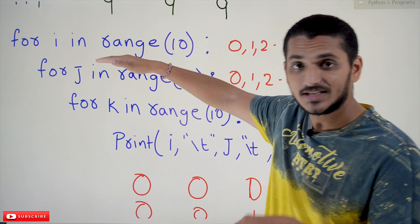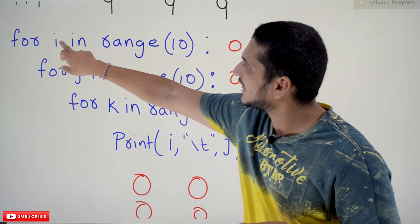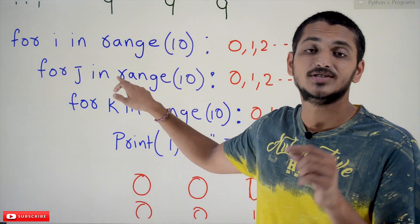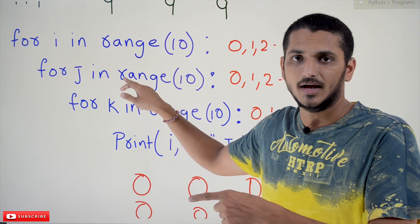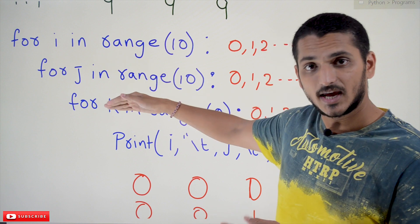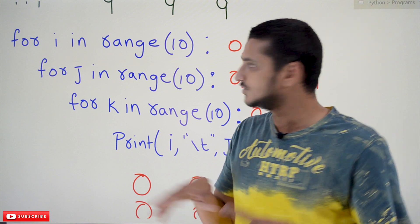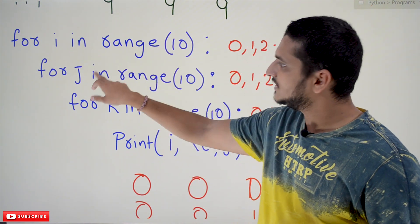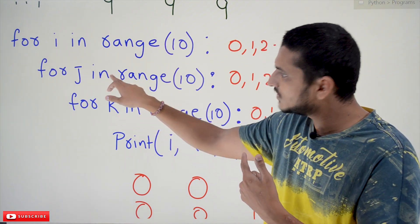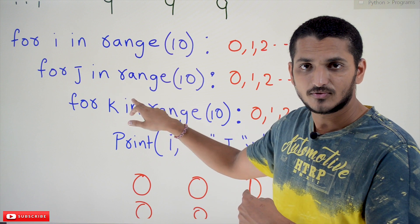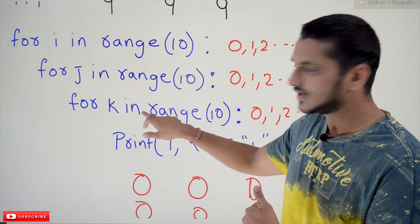Inside that we have a nested loop: for j in range(10). For i equal to 0, j will execute for 10 times, taking values 0, 1, and so on up to 9. Inside that we have yet another loop — so here we have two-level nested loops. For j equal to 0, k will execute for 10 times; for j equal to 1, k executes for 10 times; for j equal to 2, k executes for 10 times; and for j equal to 9, k executes for 10 times.